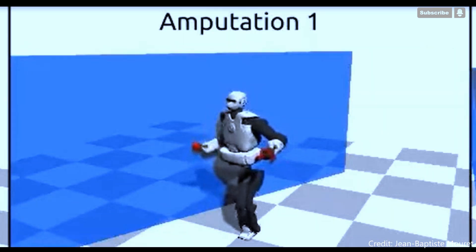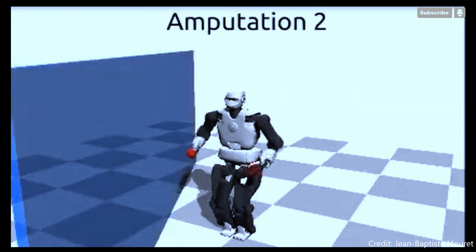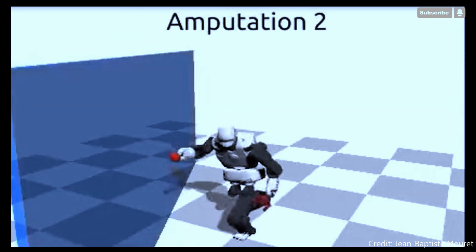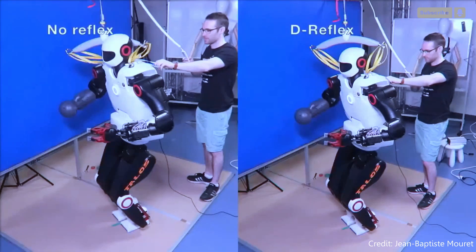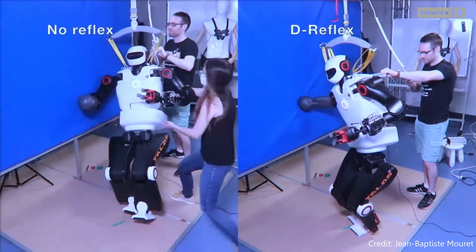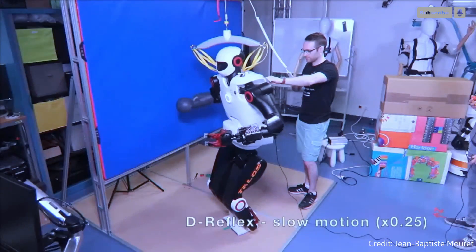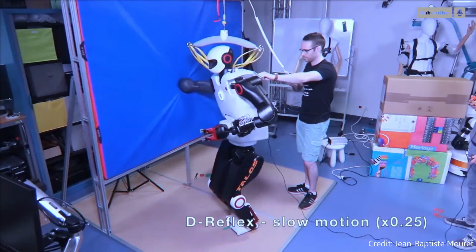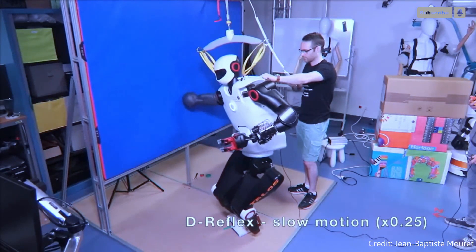The Talos humanoid robot was able to avoid falling in three of the four trials thanks to its damage reflex, demonstrating the effectiveness of this technique. The next goal is to apply this concept in the future to dynamically moving robots, which will undoubtedly be much more difficult, but will also be much more beneficial in the real world.